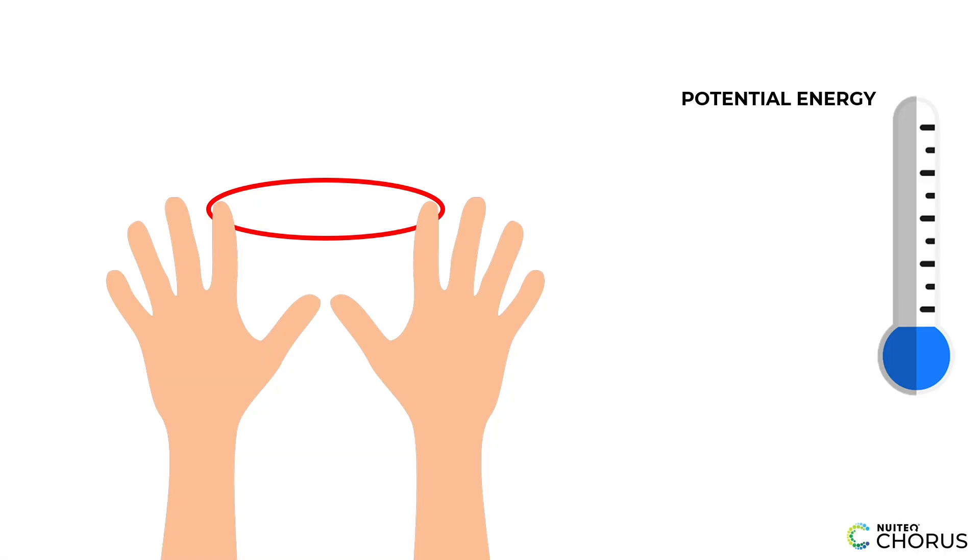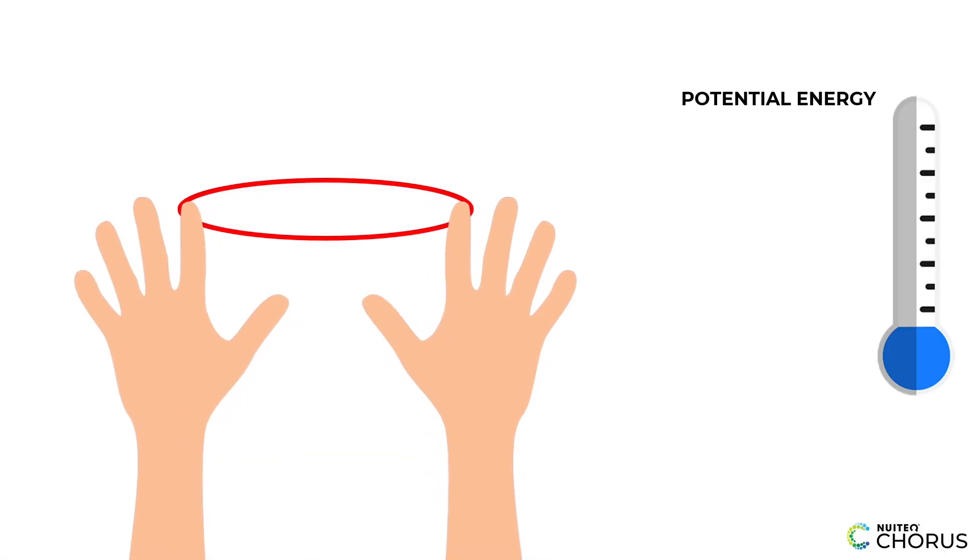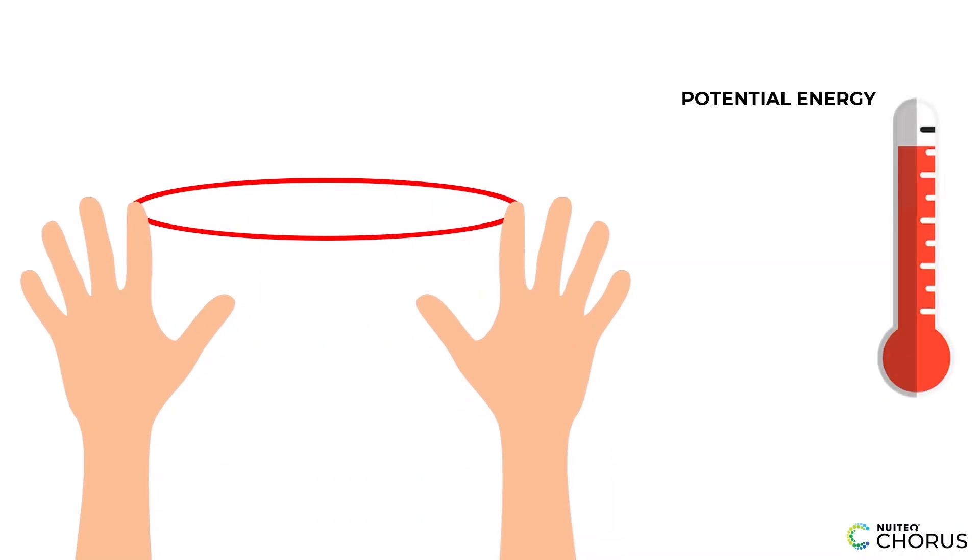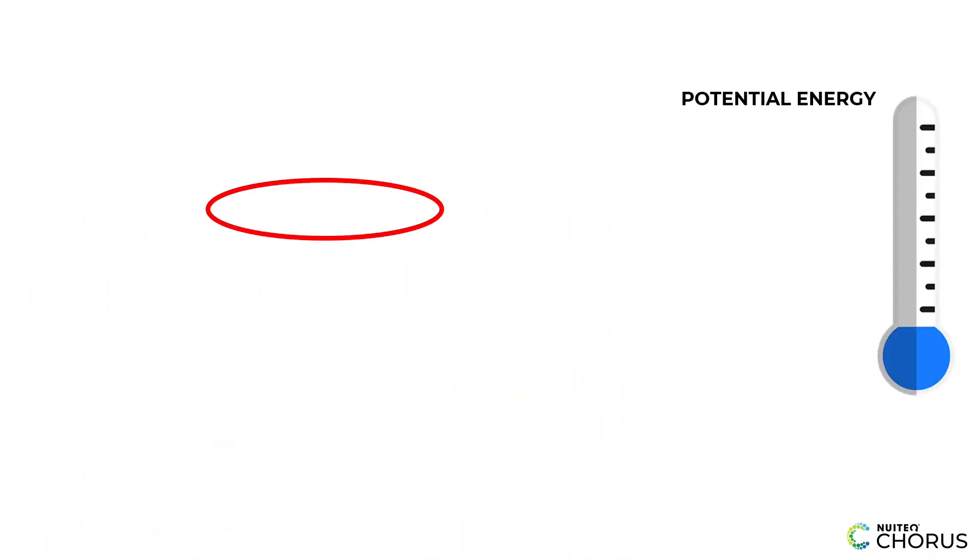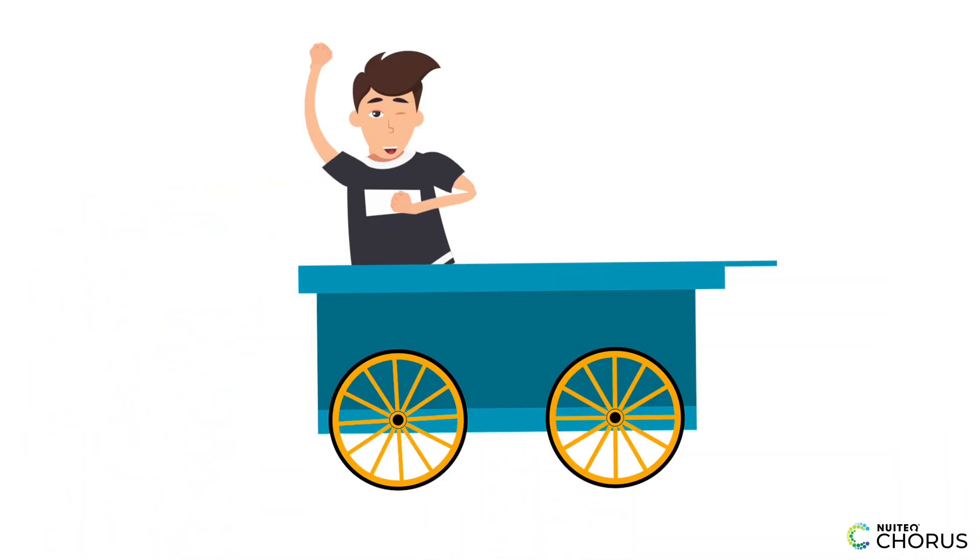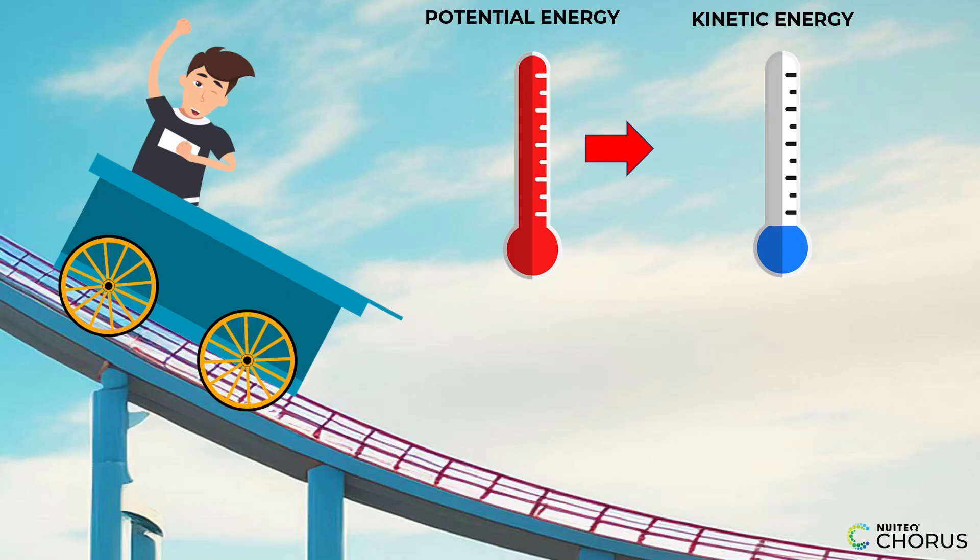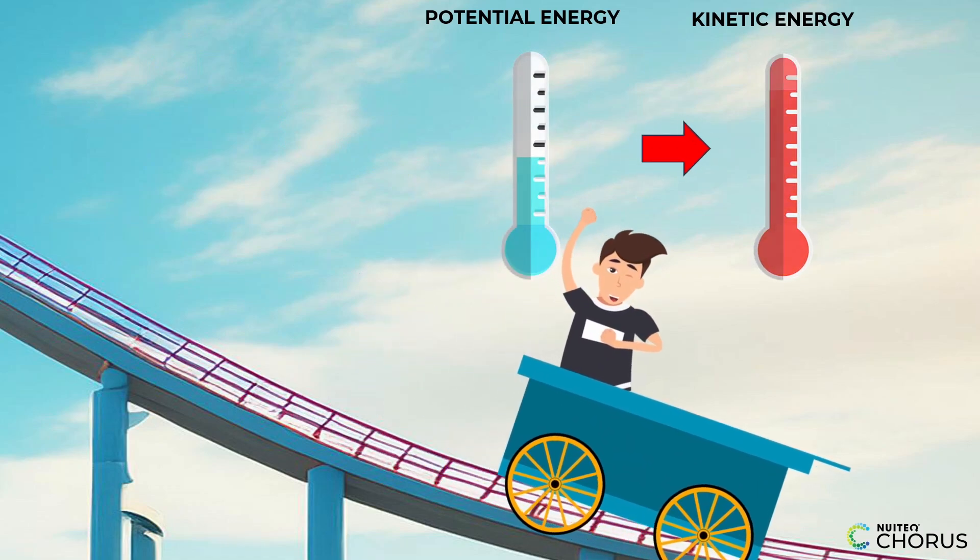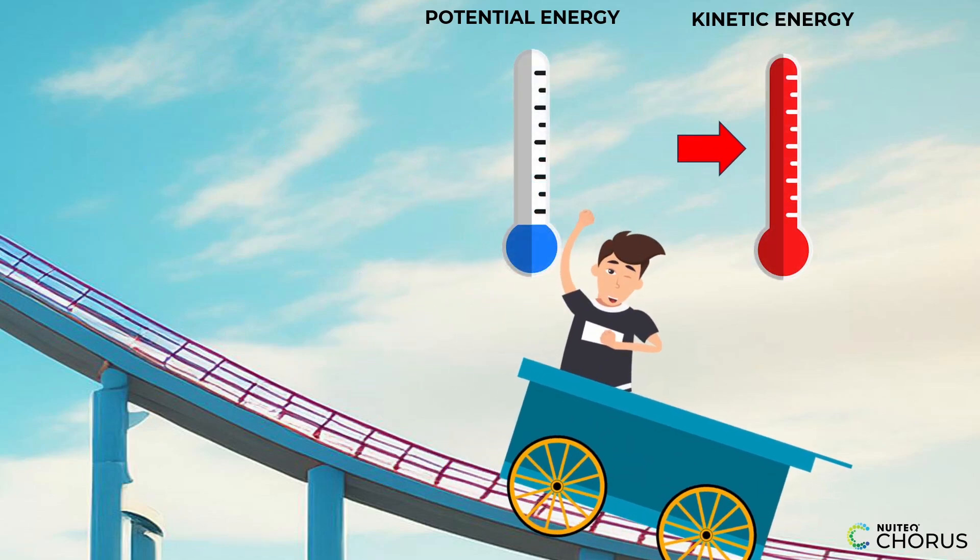When a roller coaster car climbs up a hill like this, it's building up potential energy, kind of like how you build up energy when you stretch a rubber band. That potential energy is stored in the car and the track, waiting to be turned into something else. When the car goes zooming down the other side, that potential energy gets turned into kinetic energy—the energy of motion!